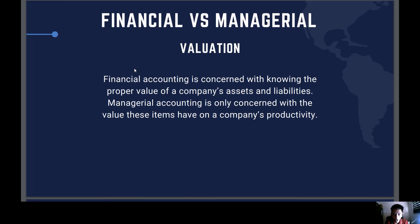Regarding valuation: financial accounting is concerned with knowing the proper values of a company's assets and liabilities. Financial accounting is more about understanding the value of the company's assets and liabilities. Managerial accounting is concerned with the value of various items in order to make the company more efficient — how the workforce can be efficient and what can be done with the data and information available.